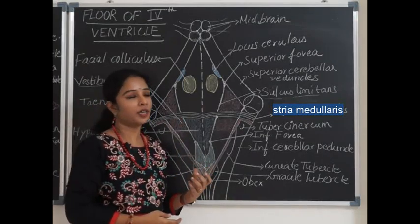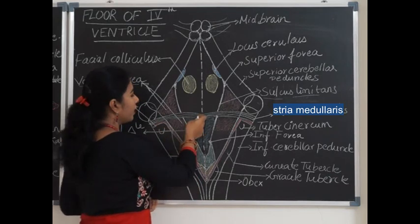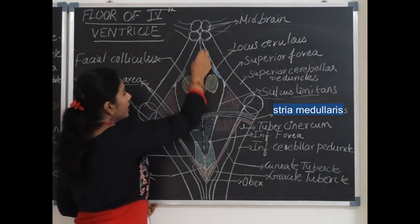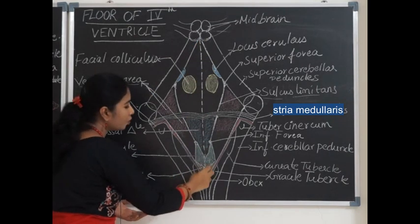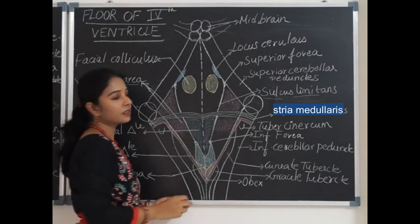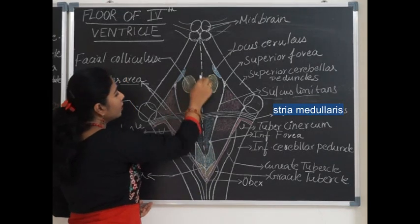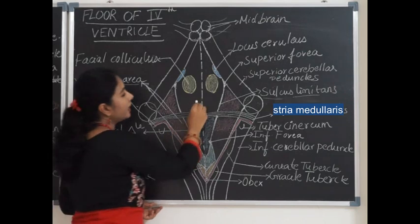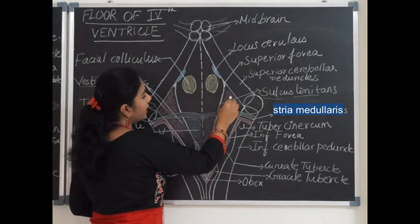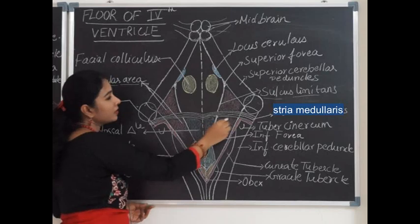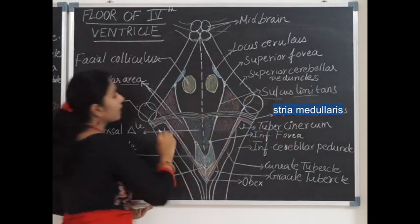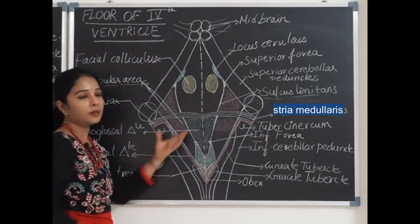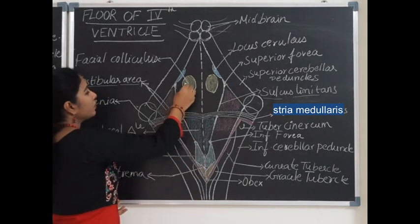These fibers are called external arcuate fibers, which run on either side toward the cerebellum. The floor can be divided into two halves by a median sulcus. Lateral to the median sulcus, the eminence on either side is called the medial eminence, which is separated from the lateral part by a sulcus called the sulcus limitans.